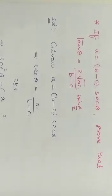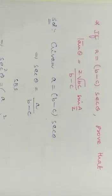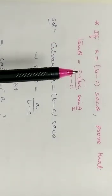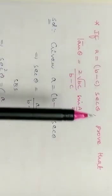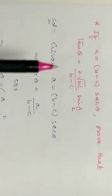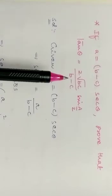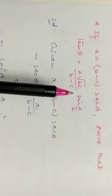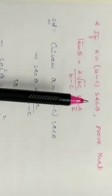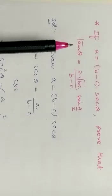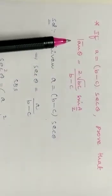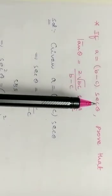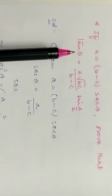Dear students, related to the above video, we have a third sum in that particular model. The third sum is: if a equals (b minus c) times secant theta, prove that tan theta equals 2√(bc) times sin(A/2) divided by (b minus c). In the previous videos of this kind of problem, they gave sine theta or cos theta to find; in this problem, they give secant theta to find tan theta.